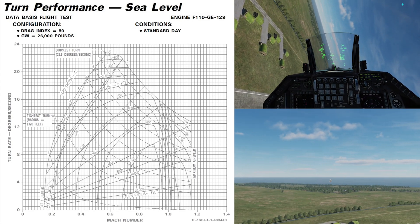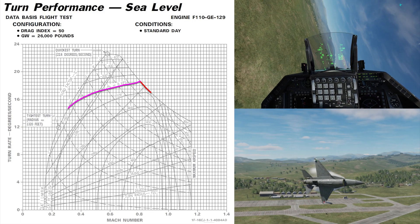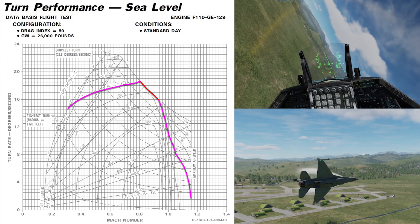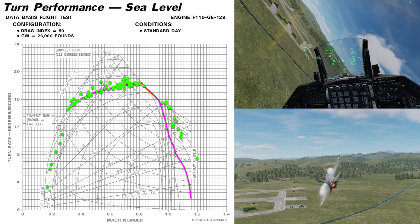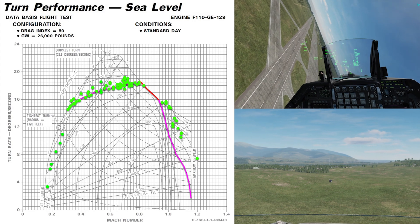So let's first look at the sustained. Here the purple line is what is expected from the plane. This is what the airplane should do as far as performance. The green dots, that is what I got.